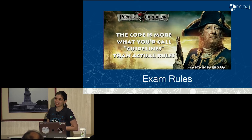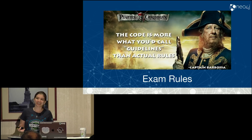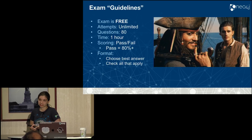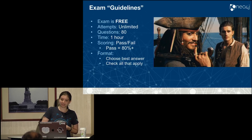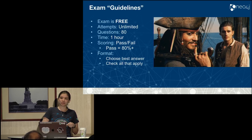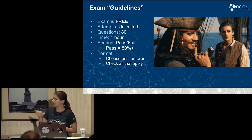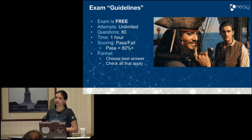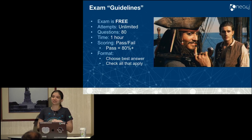We're going to talk first about the exam rules, which are actually kind of more like guidelines because they're really not overly strict. The exam is free — there's no cost to it at all. You can take it as many times as you like or need. There are 80 questions and you have a time limit of one hour. The scoring is pass/fail and you just have to get 80% to pass. That gives you about 1.25 points per question, depending on the format. There are two different question formats: choose the best answer, or check all that apply — which further divides that 1.25 points based on each box you check.